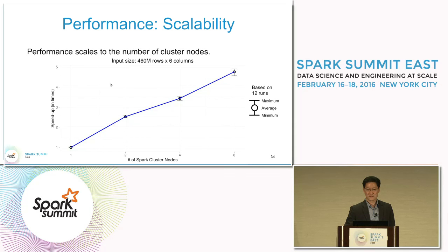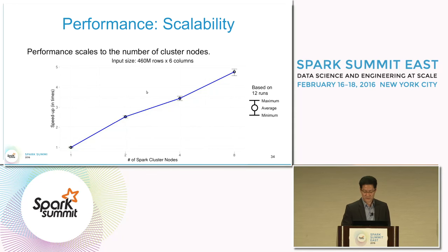As you can see from the graph, the performance scales to the number of cluster nodes, which is log-linear in our case according to the number of Spark nodes.